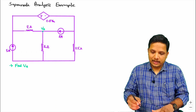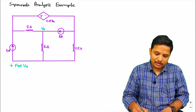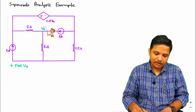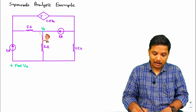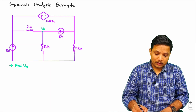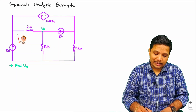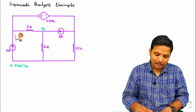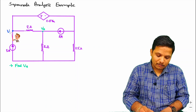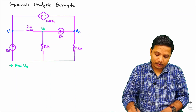Here I have given a question in which we are required to find the value of Va, that is the voltage at this terminal. To solve this circuit, I need to consider nodes. So here I am considering this is my node V1 and this is my node V2.